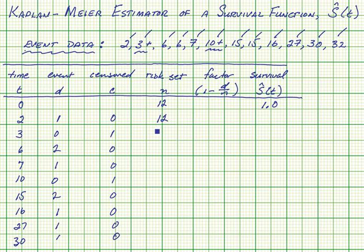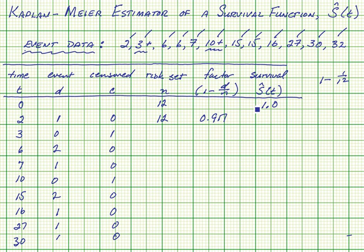What we're going to do is calculate the survivor factor at time two. So we take one minus one over twelve, which gives us 0.917. We multiply that by one and get 0.917. One failed out of twelve, so the new risk set is eleven.